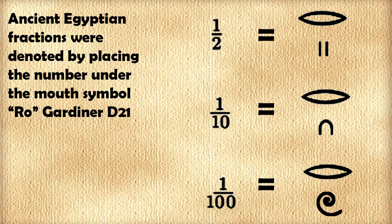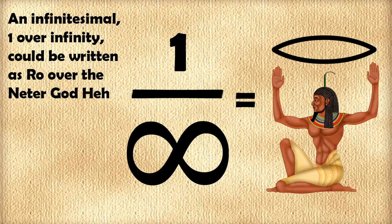Ancient Egyptian fractions were denoted by placing the number under the mouth symbol, Ro, Gardiner signless D21. So 1 half would be written as Ro over 2, 1 tenth would be written as Ro over 10, 1 hundredth would be written as Ro over 100, and 1 over infinity, or an infinitesimal, could be written as Ro over the Neter God Heh.